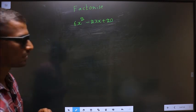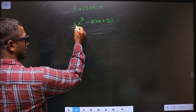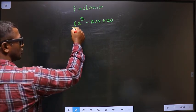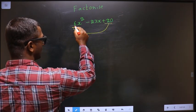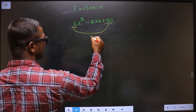step 1. The x square coefficient, which is 6 here, should be multiplied to the constant that is plus 20. So 6 into plus 20 is plus 120.